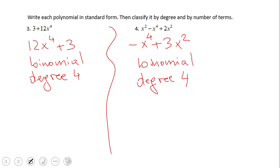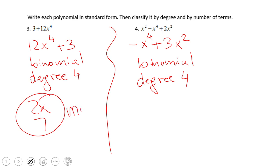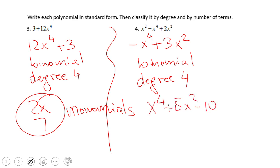A couple of short notes: expressions with a single term are called monomials. Anything that has more than three terms is called a polynomial.